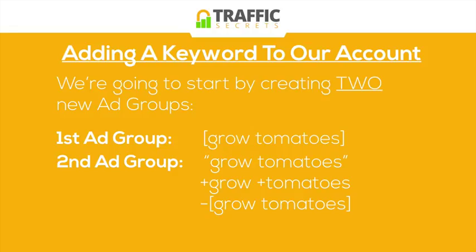One of the reasons for breaking it down this way, especially with exact match in the first ad group, is so we have very tight control over the specific ad and if needed a specific landing page for that specific keyword. That's how we get the highest possible click-through rate and conversion rate — because everything is tailored: ad, landing page, and process, all matched to that exact keyword.